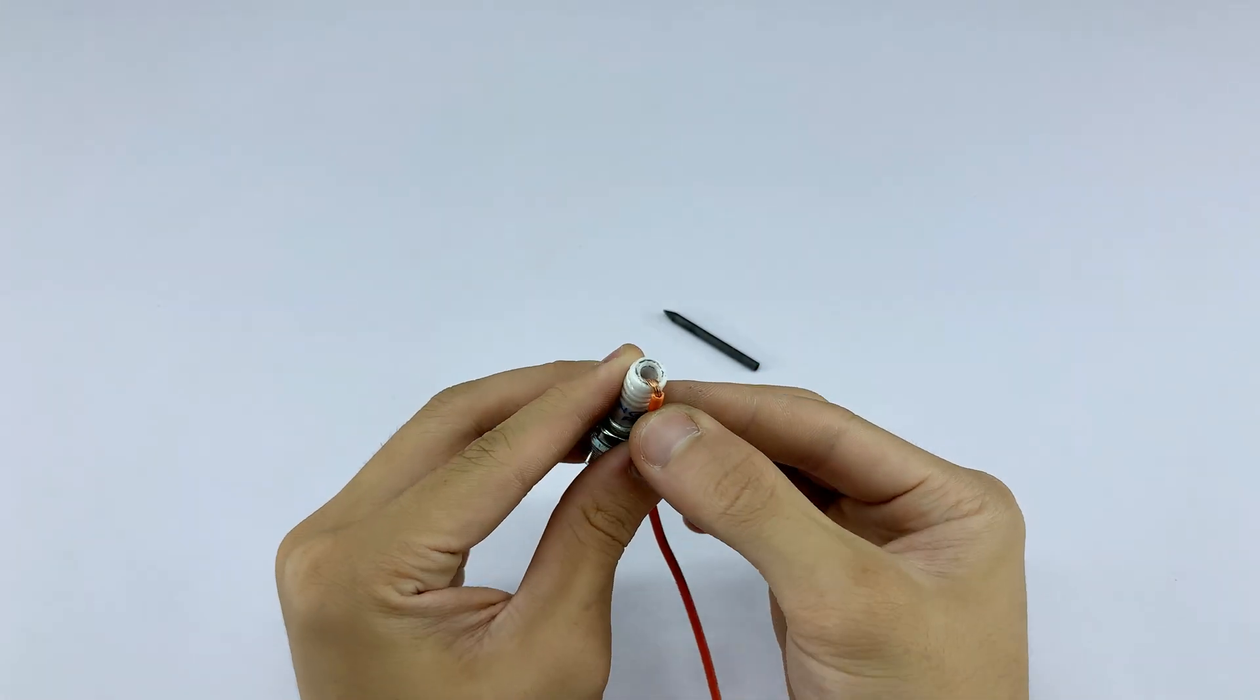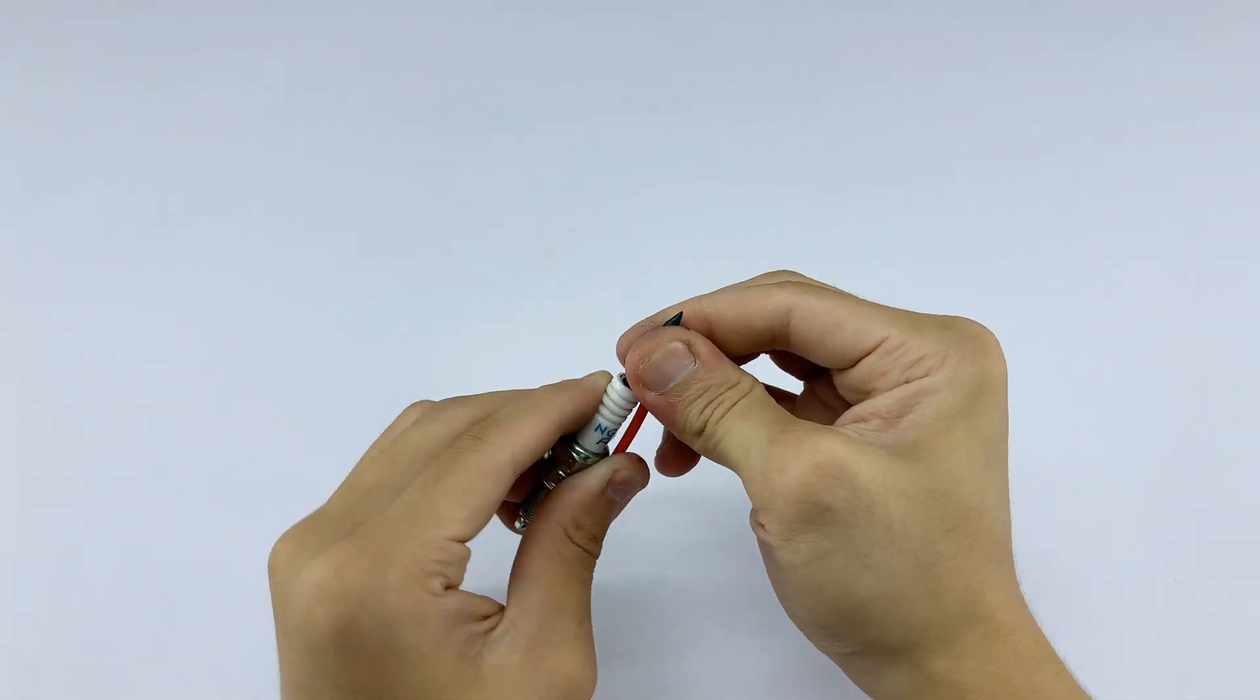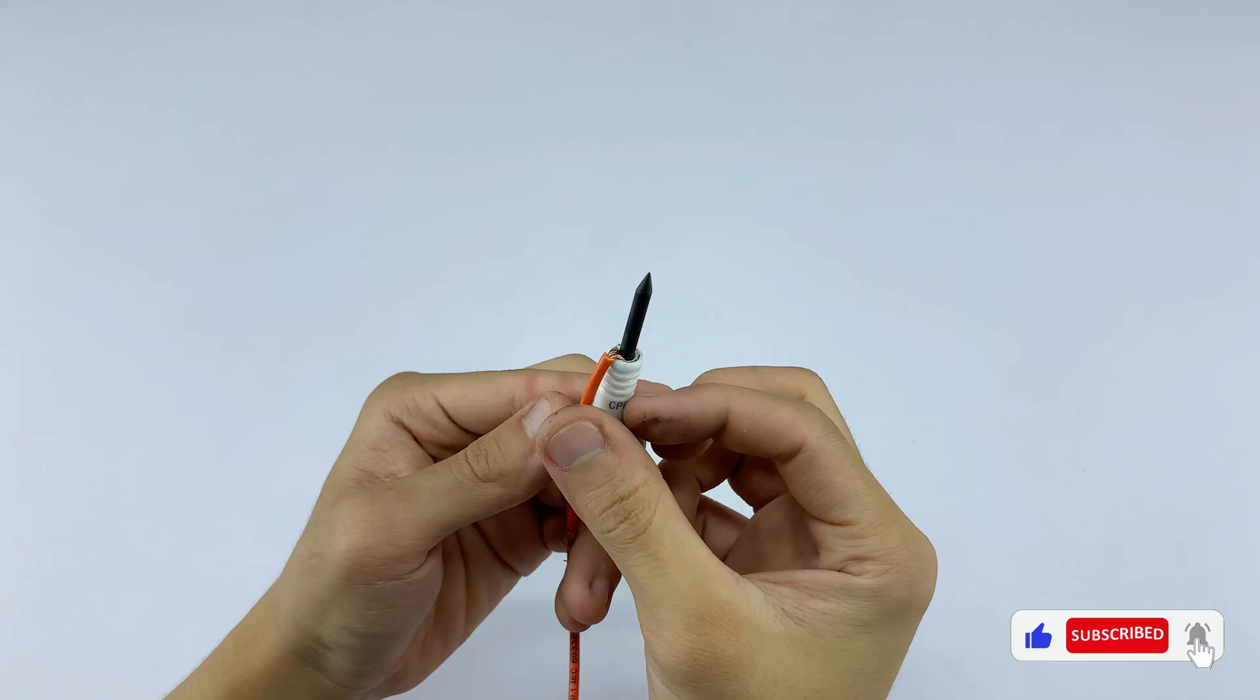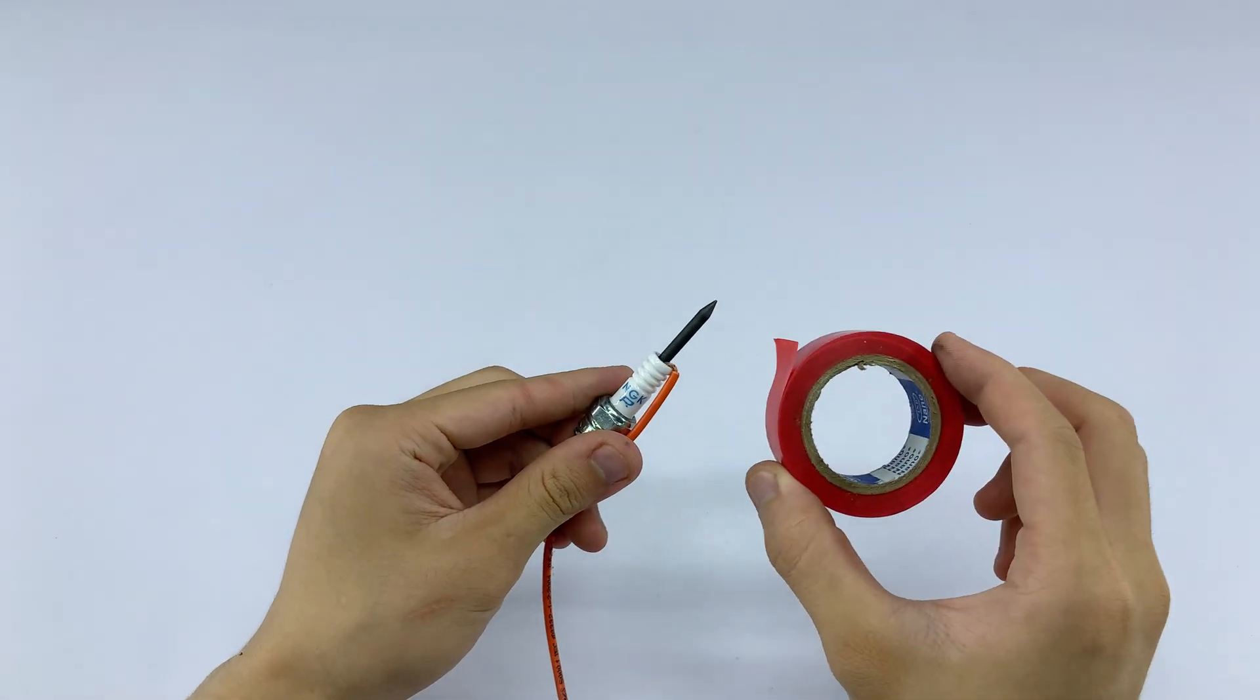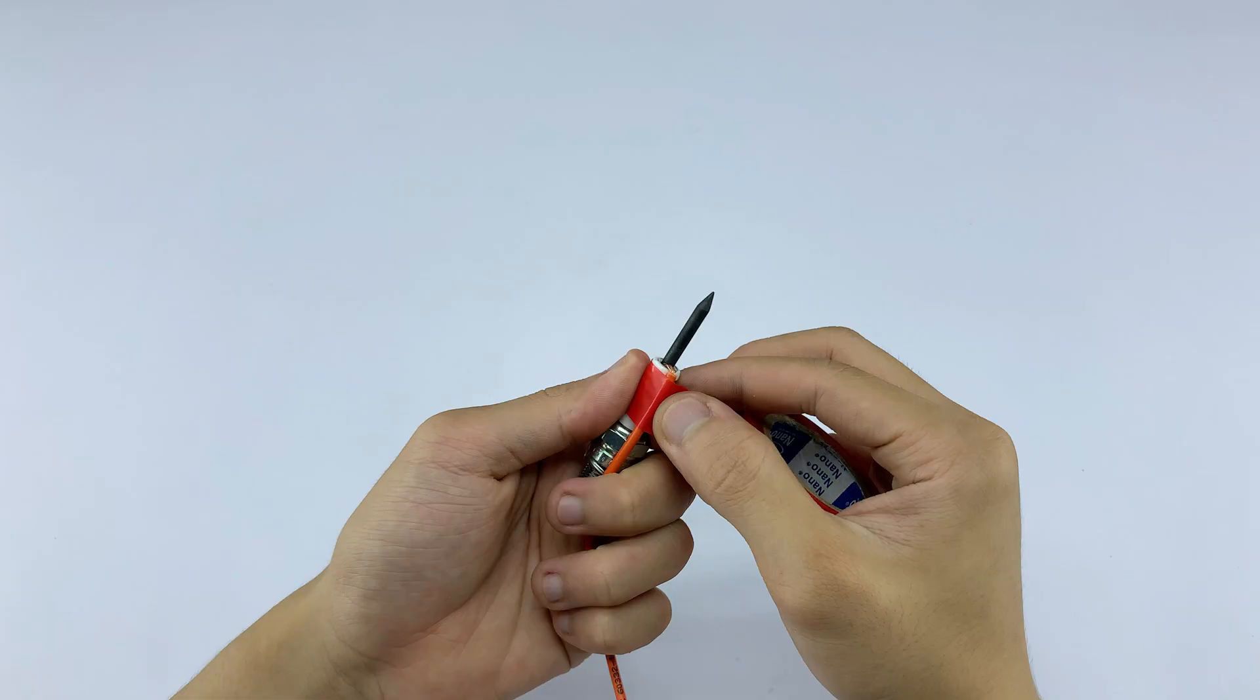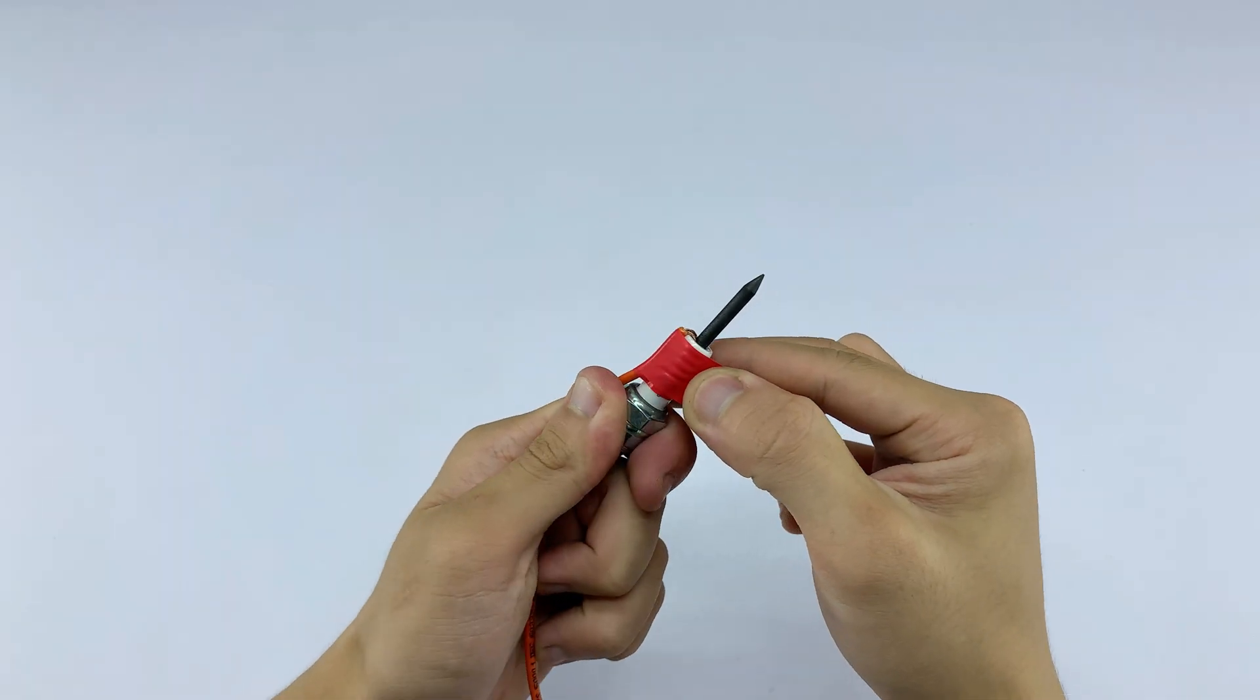After placing the copper core into the hollow space of the spark plug, I carefully insert the battery core with its sharpened tip. Take it slow to make sure everything fits snugly, not too loose, not too tight, so the welding tip stays firm and stable when in use. I wrap some tape around the wire and the spark plug, keeping everything neat and secure. This way, the wire stays in place and doesn't get in the way while we work, making the whole setup look much tidier.